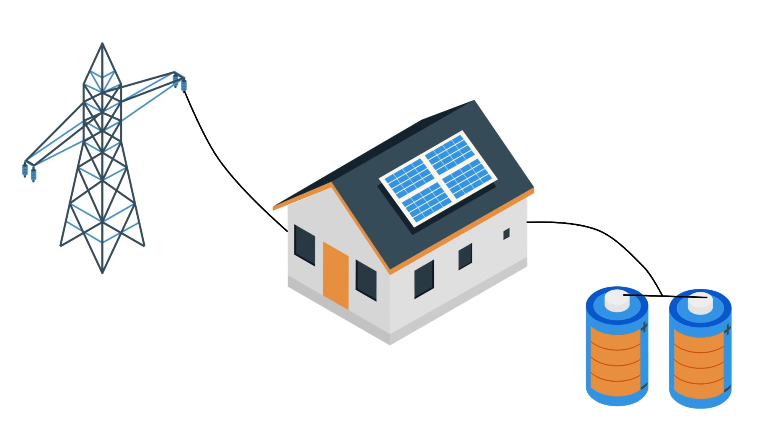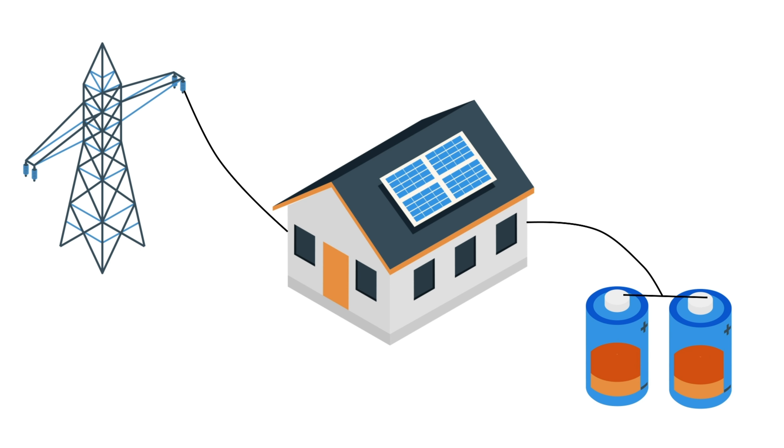The third system is the hybrid system. The hybrid system is a combination of on-grid and off-grid. We have a battery and a battery charge. It works with current, so we can use it as current and also connect to the grid.